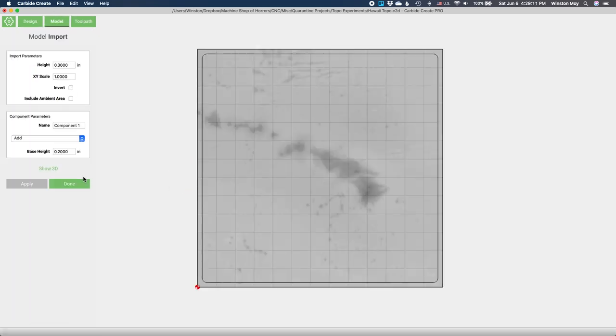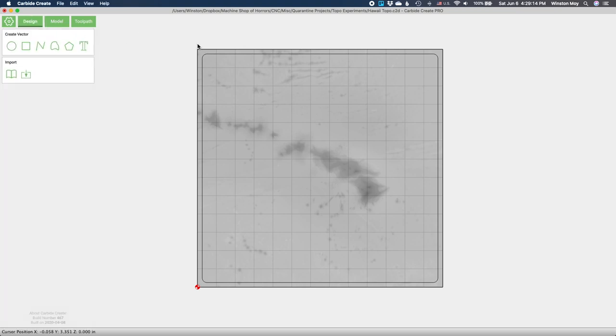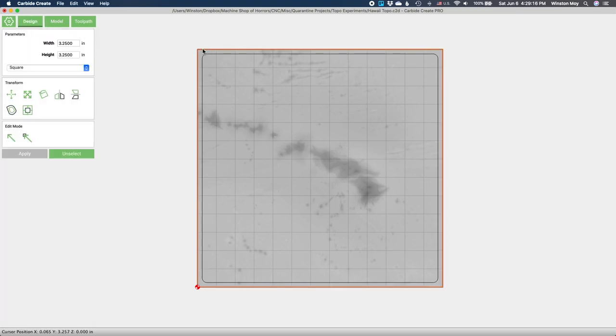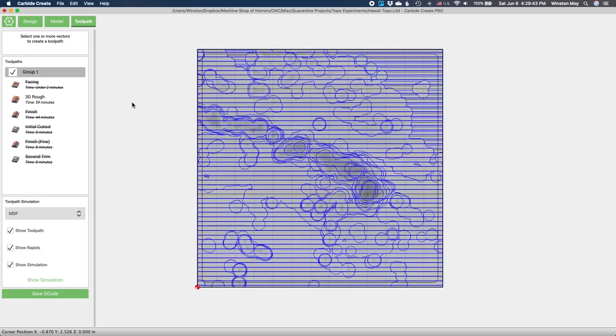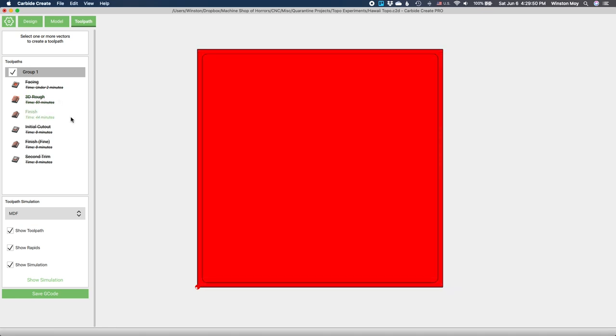I had a square sketched in my design workspace that encompassed everything so that I could use that to identify the region that my 3D roughing and parallel finishing toolpaths would work within. I used a 1/8 inch square endmill for roughing and a 1/16 inch ball endmill for finishing.